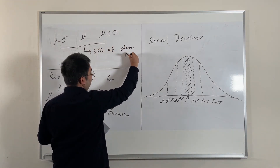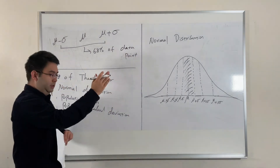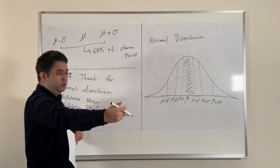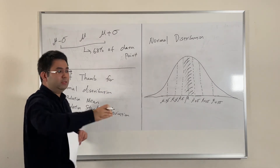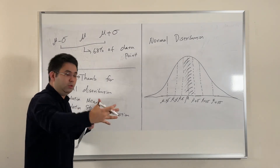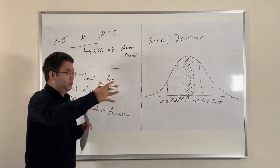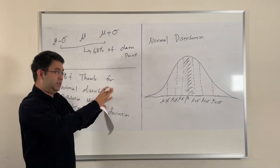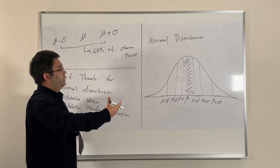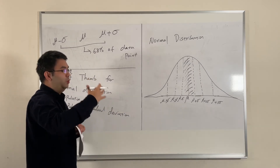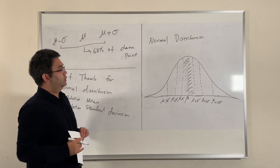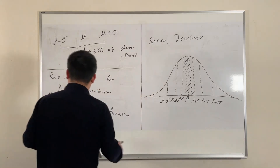What it means is that the mean in the middle, one standard deviation less, one standard deviation more — this range is going to cover 68% of the data points in the whole population or sample. This concept applies to both: 68% of the data points will be within this range if you have a normal distribution.